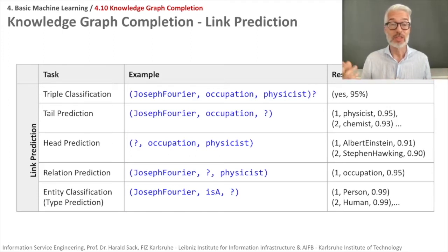You can do tail prediction, which means you give the system a subject and a predicate and then you ask what's the object. For example, you give the system the triple Joseph Fourier and occupation, and you don't know the object. The result would say, if you have a good model, that your occupation of Joseph Fourier is physicist and probably with the second highest probability chemist.